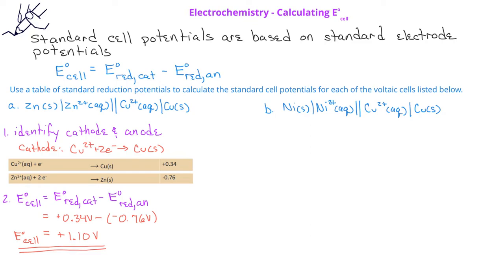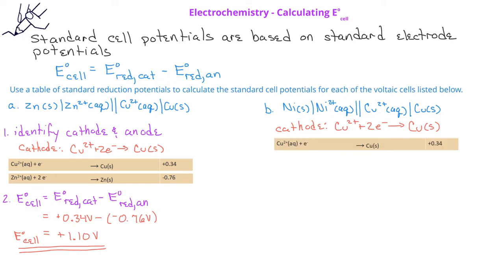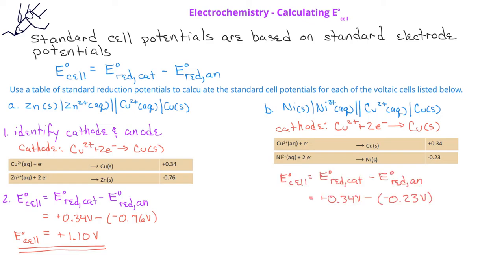We can do the same process for the example with the nickel/nickel-2+, copper-2+/copper voltaic cell. In this case, the copper-2+/copper is still the cathode, and it has the same standard reduction potential of 0.34 volts. The nickel/nickel-2+ half-reaction is therefore the anode, and when we look on the table of reduction potentials, we find it has a value of negative 0.23 volts. When we plug these into the standard cell potential equation, we find that the standard cell potential for this voltaic cell is plus 0.57 volts.